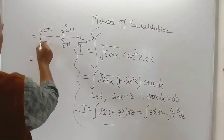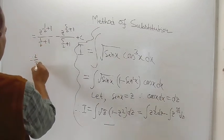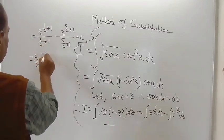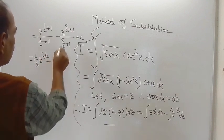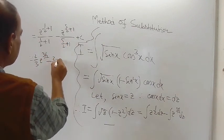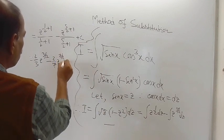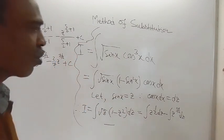So this is 3 by 2, that is 2 by 3, z to the power 3 by 2 minus 7 by 2, that is 2 by 7, z to the power 7 by 2 plus c.